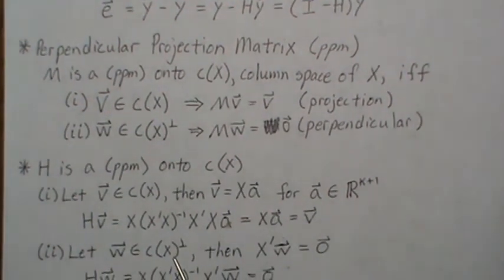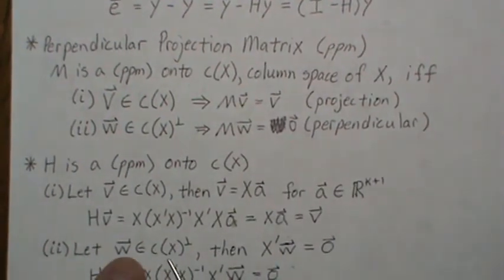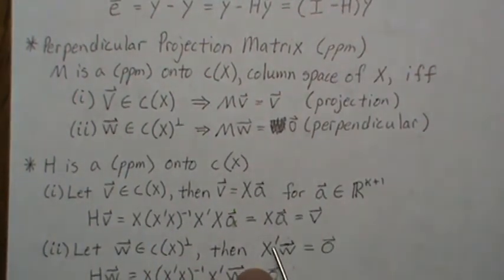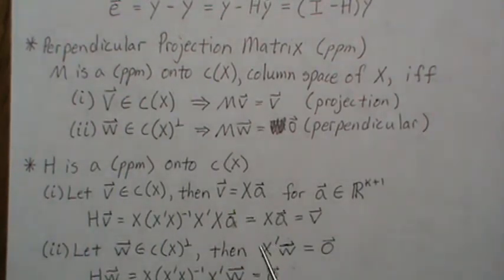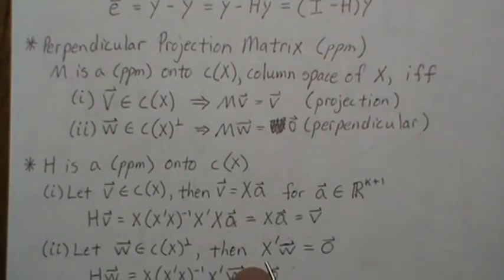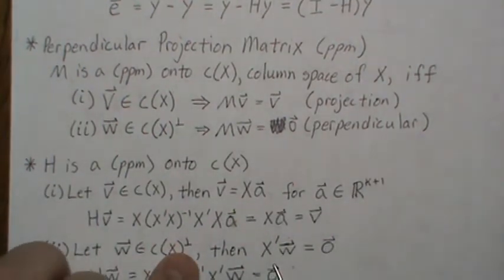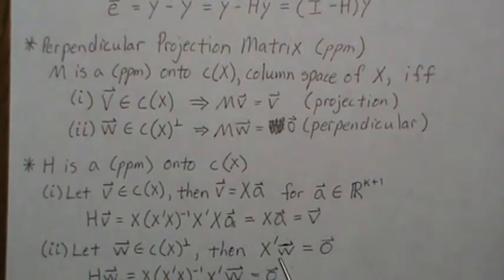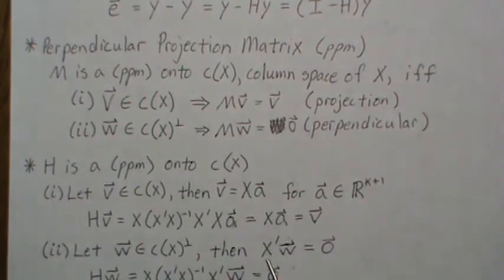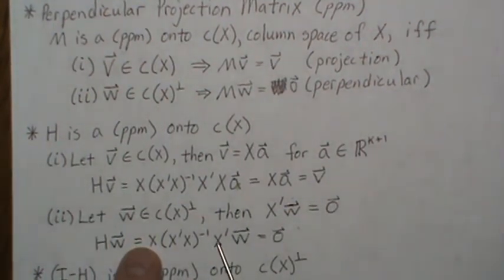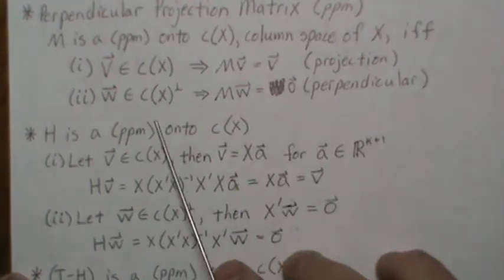Now let w be in the orthogonal complement to the column space of x. Then x transpose w is the zero vector — that's how we define orthogonality with the dot product. When x is transposed, the columns become rows, so it's orthogonal to every vector in x, with respect to the standard inner product. So hw — h is x times x transpose x inverse x transpose, and x transpose w is always zero — so hw equals zero, satisfying the second requirement.